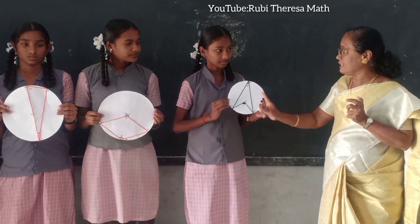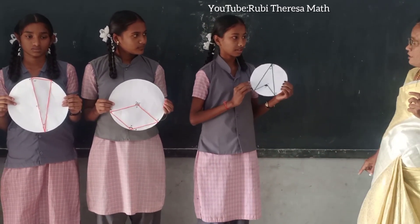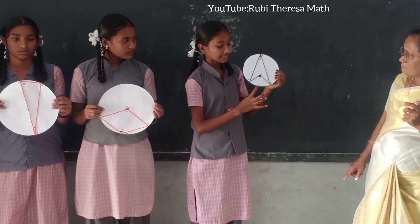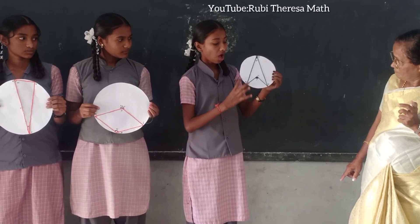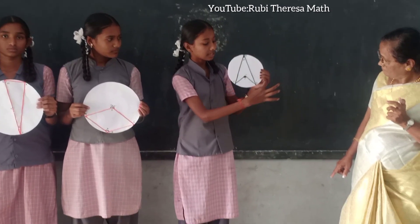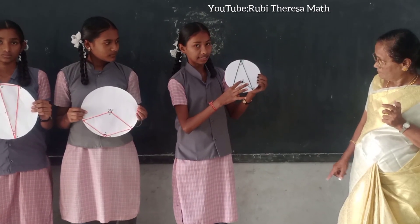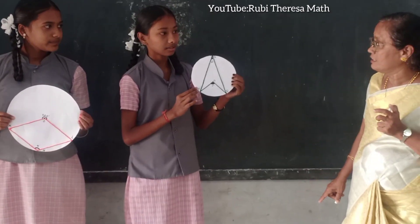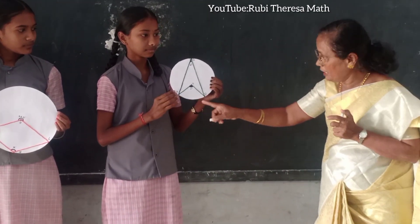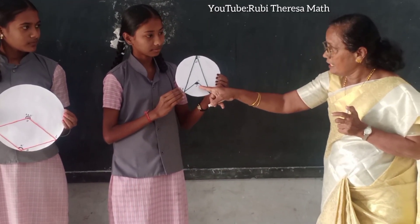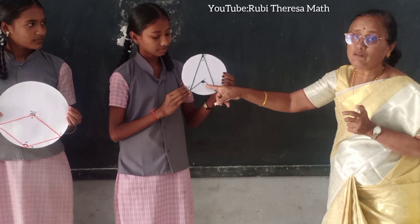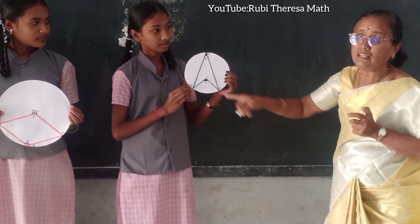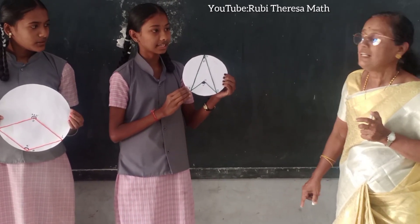The angle subtended by an arc of a circle at the centre — what is the name of the arc? PR. What angle is subtended at the centre? What is the name of the angle? X.